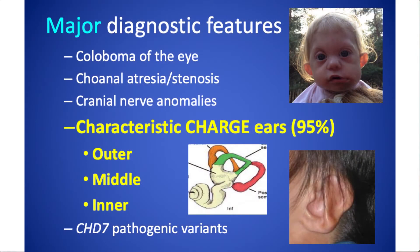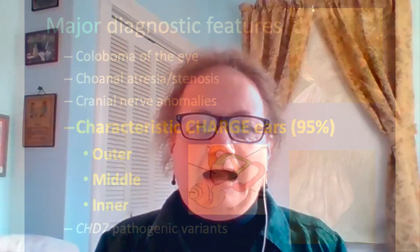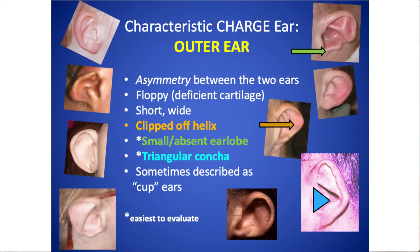The next major diagnostic feature is the characteristic CHARGE ears. This is actually a set of features because it can involve the outer ear, the middle ear, or the inner ear. Looking at all of those, about 95% of people with CHARGE have some issue somewhere in their ears. The outer ears of CHARGE may be completely normal, very close to normal, or so distinctive that I've seen kids where I looked at their ear and said, 'that child has CHARGE until proven otherwise.' One of the most noticeable characteristics is asymmetry between the two ears — sometimes one looks very typical and the other very unusual, but they usually don't look like each other.